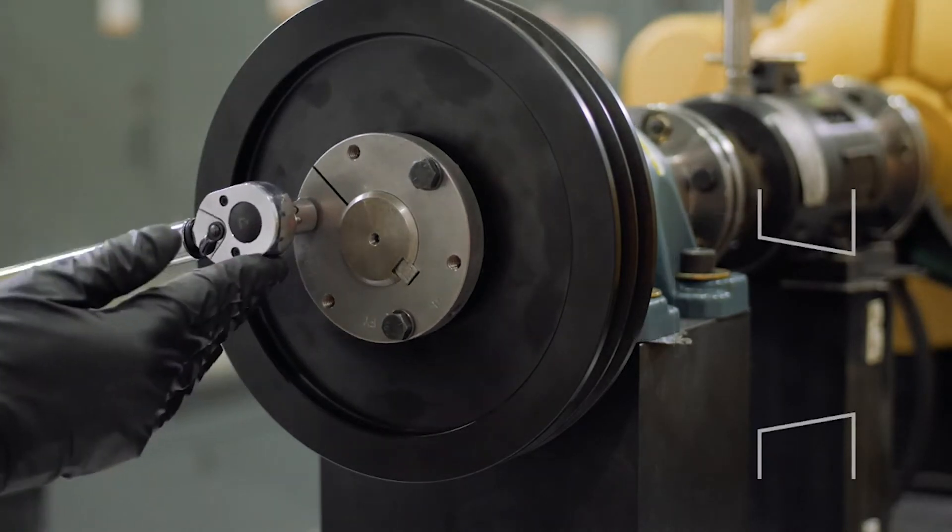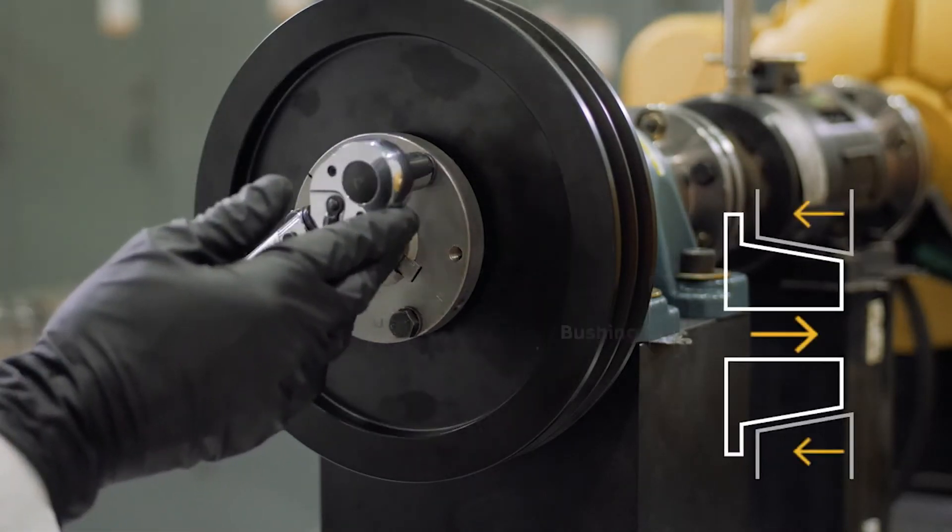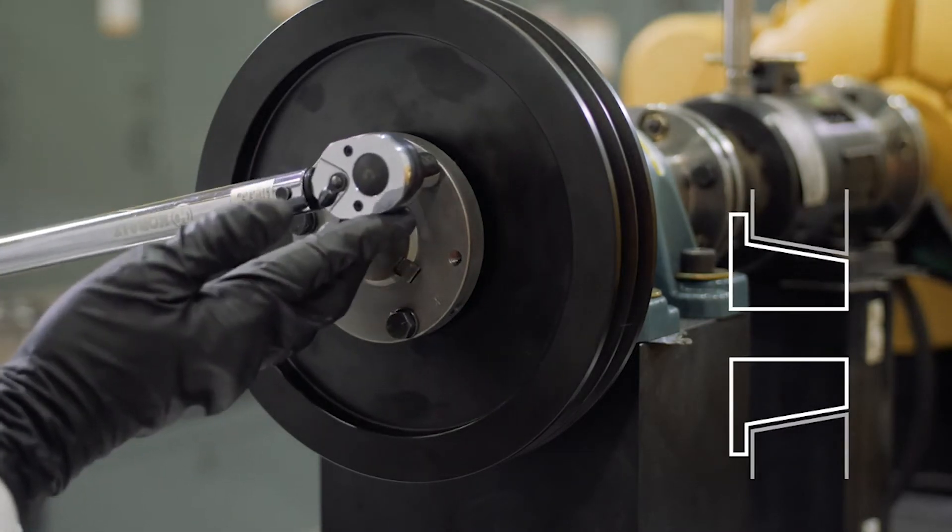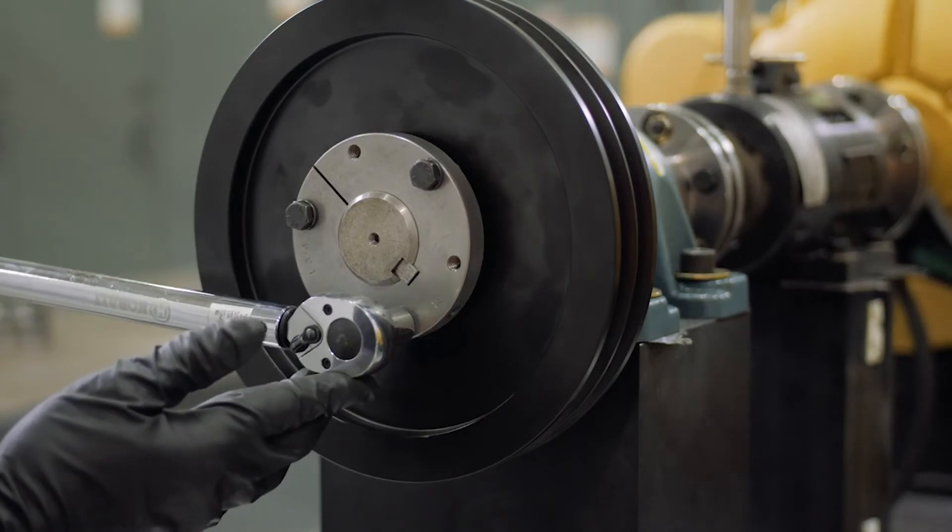Tightening of the mounting bolts draws the tapered hub and bushing surfaces together, wedging the bushing into place and creating a concentric shaft attachment capable of transmitting torque.